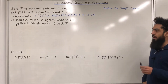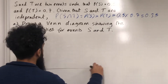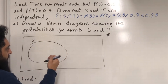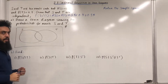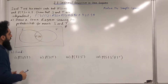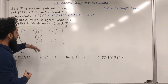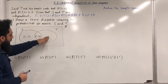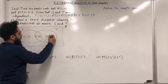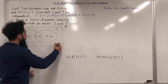Part A: draw a Venn diagram showing the probabilities for events S and T. We start with a rectangle representing the sample space. I draw event S and event T inside the sample space. Probability S intersect T is 0.35, so I label the intersection 0.35. Probability S only is 0.5 minus 0.35, giving 0.15. Probability T only is 0.7 minus 0.35, giving 0.35. The outside probability is 1 minus the sum of these, giving 0.15.